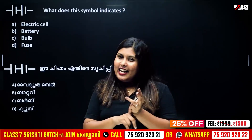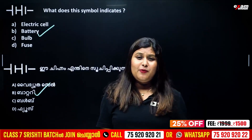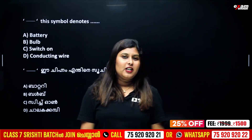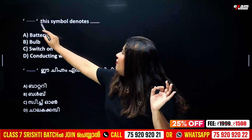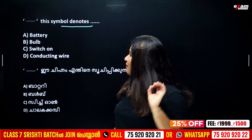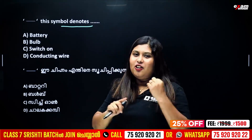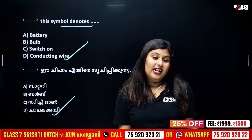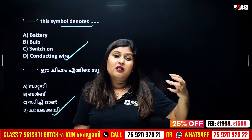Electric cell — what is the symbol? Option B: Battery. Everything is inevitably a battery or bulb. Switch in the on condition. The conducting wire has less resistance, that is why we use copper wire.